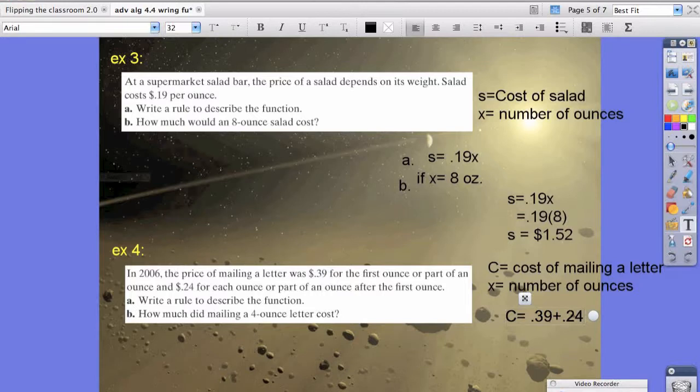Therefore, if the first ounce is 39 cents, then the second ounce wouldn't be 24 cents times x. It would be 24 cents times the quantity x minus 1. Where x is equal to the number of ounces, and we're going to subtract 1 because the first ounce is 39 cents.